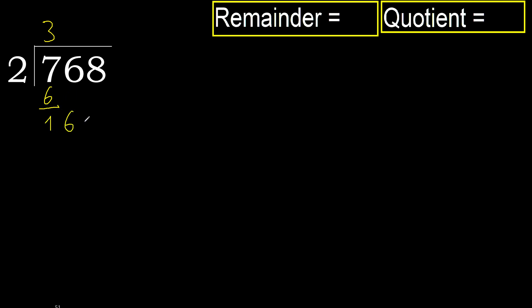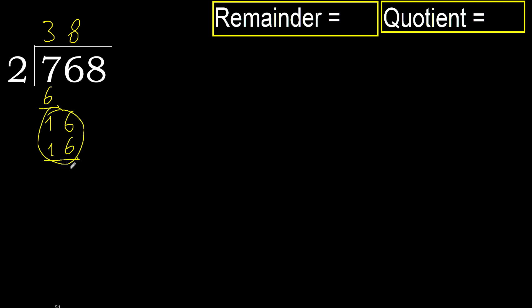Next, bring down 6, making 16. 2 multiplied by 9 is 18 — 18 is greater. Multiplied by 8: 16 is not greater. So we subtract: 16 minus 16 is 0.